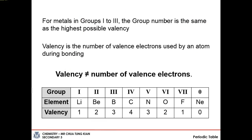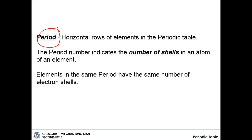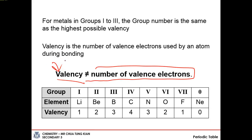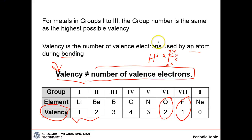Period refers to the horizontal rows of elements in the periodic table, and it indicates the number of shells. All elements in the same period have the same number of shells, and as you go down, it increases by 1 for every consecutive period. Also take note of the term valency — valency is NOT the same as the number of valence electrons. Valency refers to the number of electrons used by an atom during bonding. For example, fluorine has 7 valence electrons, but its valency is 1, because it only uses 1 electron to form a single covalent bond in HF.